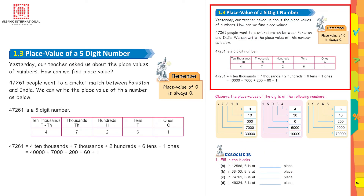Coming to place value of a 5-digit number. Yesterday our teacher asked about the place values of numbers — how can we find place value? For example, 47,261 people went to a cricket match between Pakistan and India. We can write the place value of this number as below. Remember, we always begin from the right-hand side: ones, tens, hundreds, thousands, ten thousands. Put 1 under ones, 6 under tens, 2 under hundreds, 7 under thousands, and 4 under ten thousands.